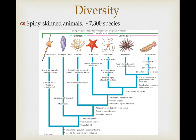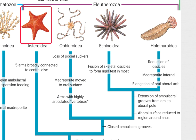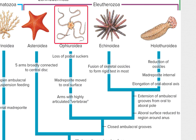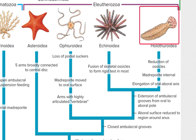It's a fairly diverse group with over 7,000 species, some of which you're familiar with. For example, the sea stars, sometimes referred to as starfish, but usually referred to as sea stars, and you can clearly see the pentaradial symmetry. Then we have brittle stars, which have five or more flexible arms, and also basket stars. Then we have the Echinoidea, which includes the sea urchins and sand dollars, and finally the sea cucumbers.